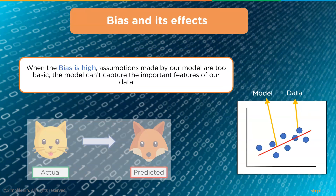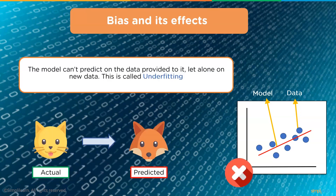When bias is high, assumptions made by our model are too basic and it can't capture the important features of our data. Early facial recognition software based recognition only on a person's profile, not their facial features — creating huge bias. The model can't predict on the data provided, let alone on new data. This is called underfitting.